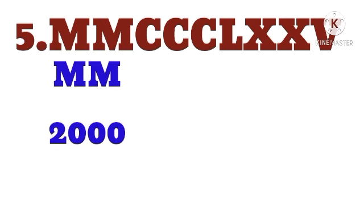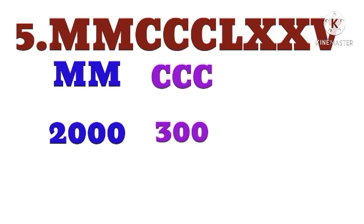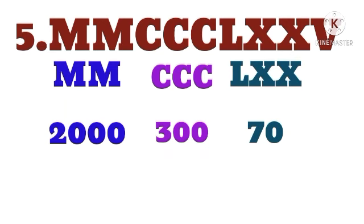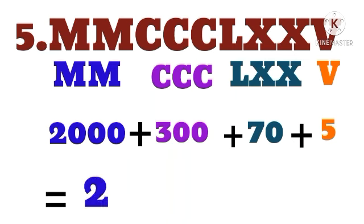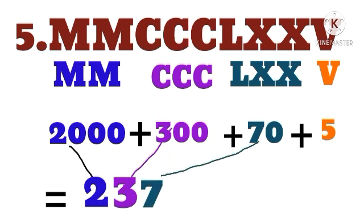Two M's means 2000, three C's means 300, LX means 70, V means 5. So 2000 plus 300 plus 70 plus 5 equals 2375.